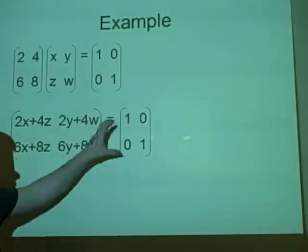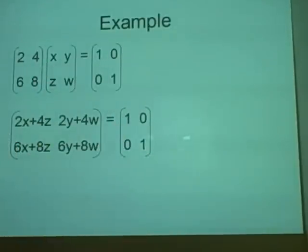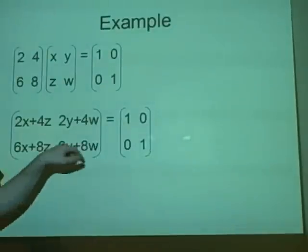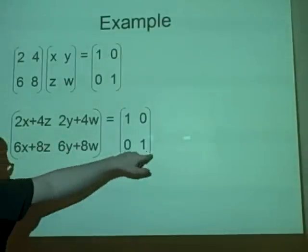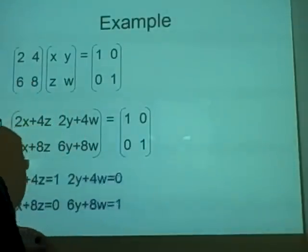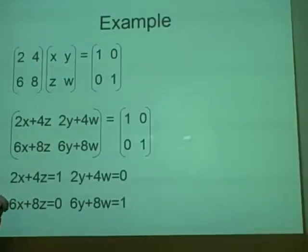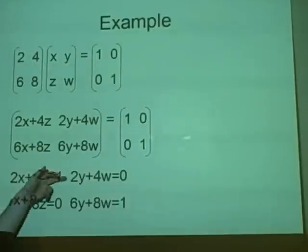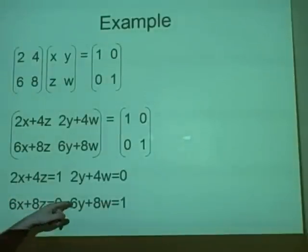For a 2 by 2 matrix we have a 2 by 2 identity matrix. So we can equate values: 2X + 4Z = 1, 6X + 8Z = 0, and 2Y + 4W = 0, 6Y + 8W = 1. We have a set of simultaneous equations. Multiplying the first equation by 2 and subtracting gives 2X equals minus 2, so X equals minus 1.